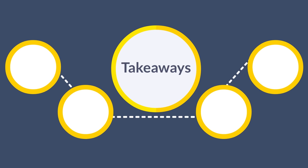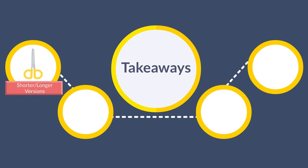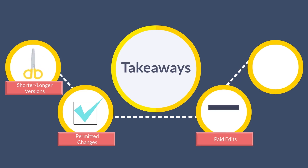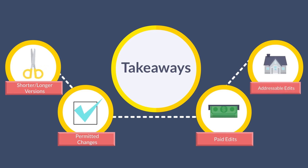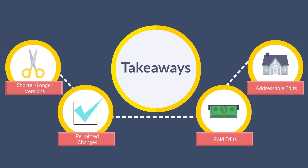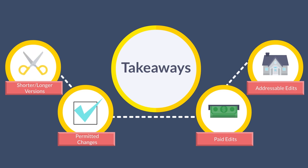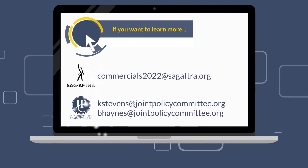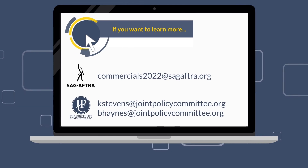And that's it! We covered the four types of edits that do not constitute a new commercial: 1. Shorter or longer versions. 2. Permitted changes. 3. Paid edits. And 4. Addressable edits. We hope this has been helpful and that you have a better understanding of all the new editing options available under the 2022 commercials contract. Reach out if you have questions about these terms or anything related to the new 2022 commercials contract.